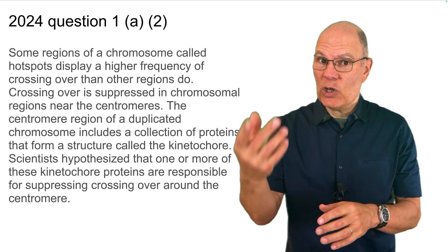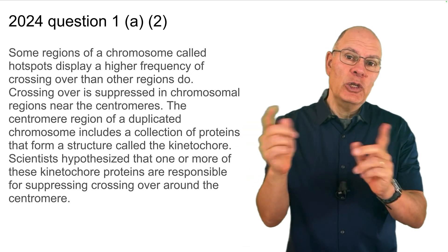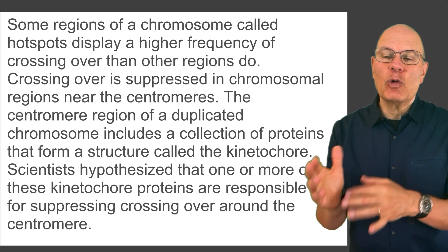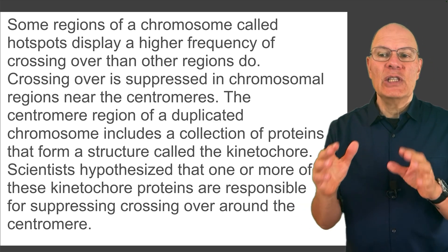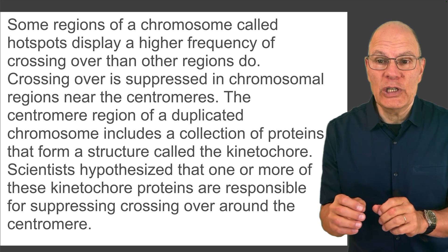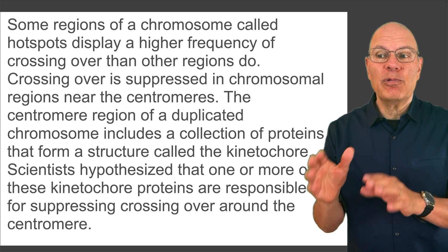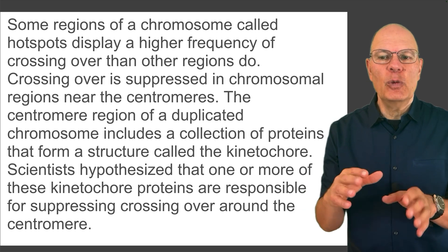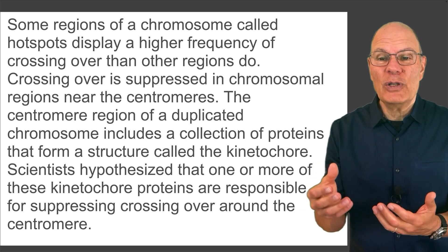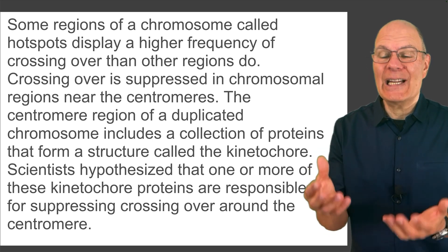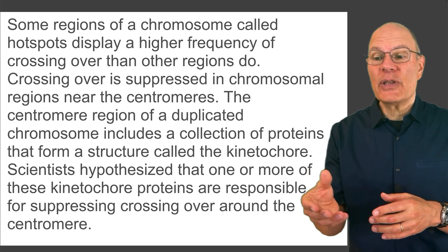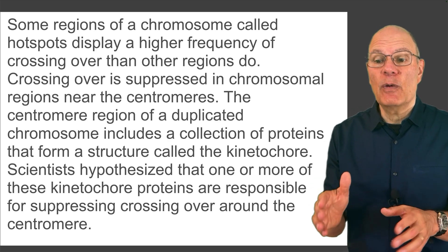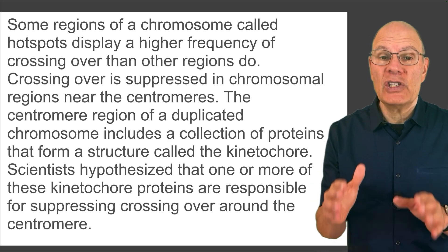Question 1a, part two has this introductory text. Some regions of a chromosome called hotspots display a higher frequency of crossing over than other regions do. Crossing over is suppressed in chromosomal regions near the centromeres. The centromere region of a duplicated chromosome includes a collection of proteins that form a structure called the kinetochore. Scientists hypothesized that one or more of these kinetochore proteins are responsible for suppressing crossing over around the centromere.